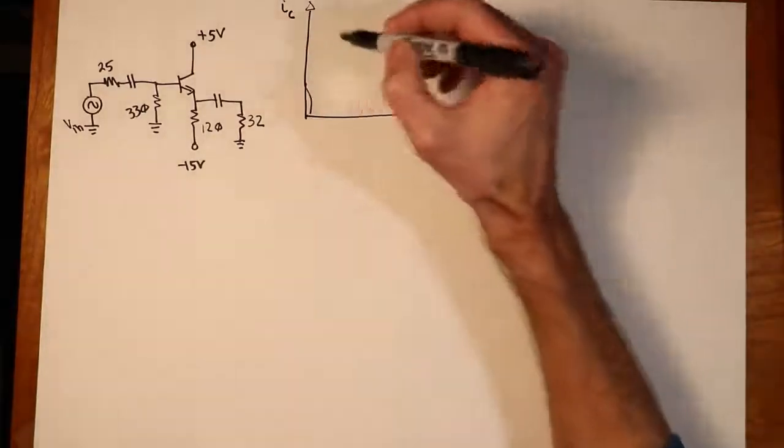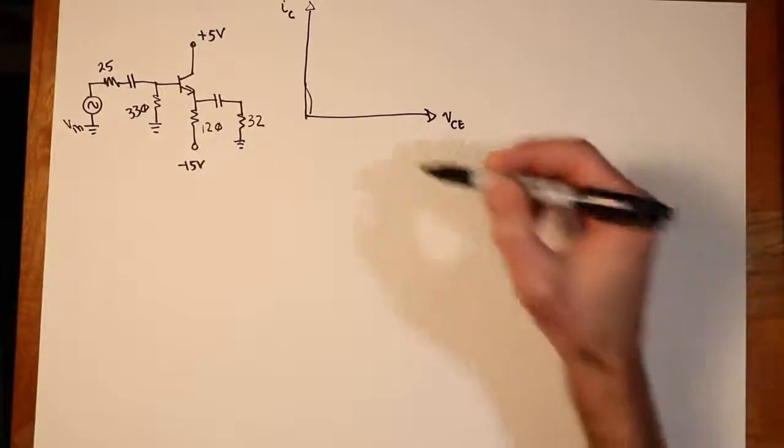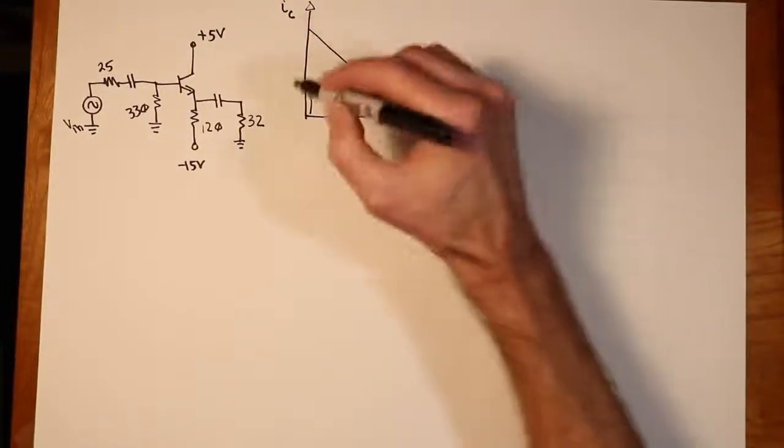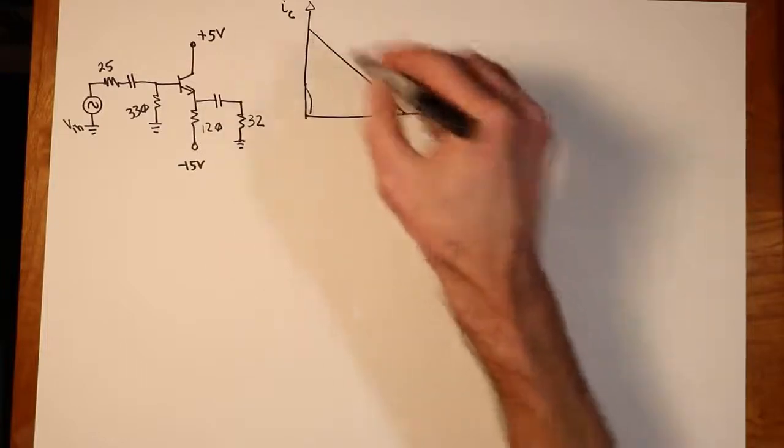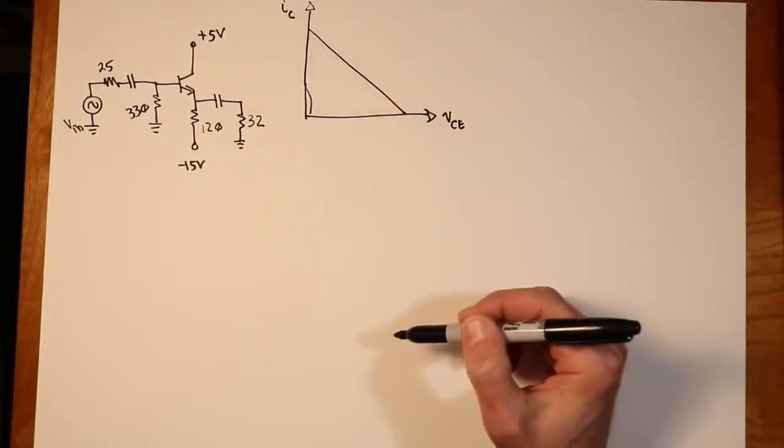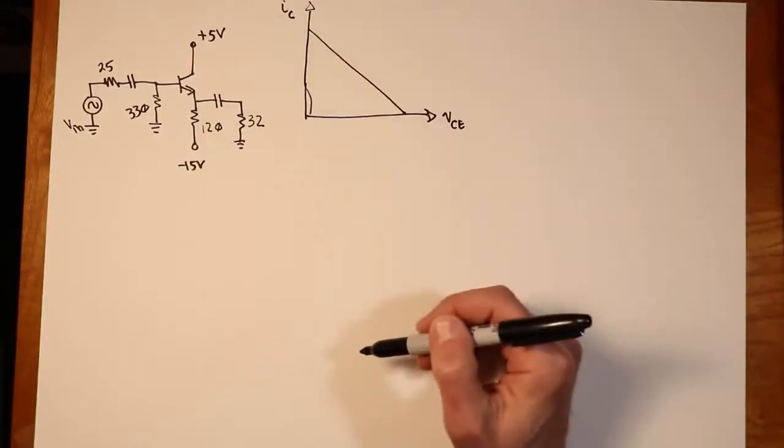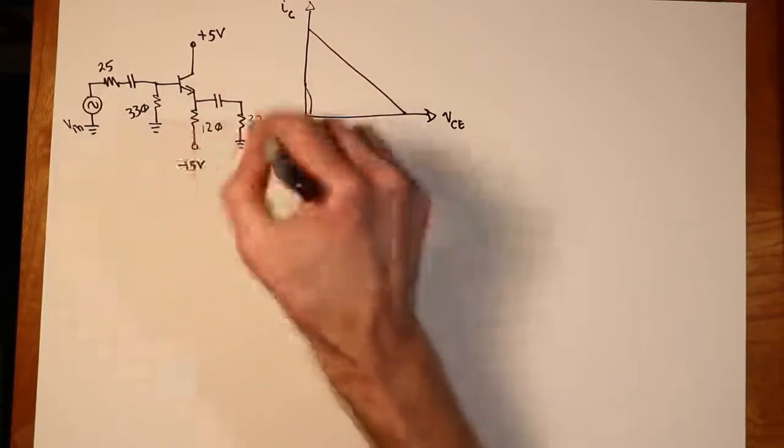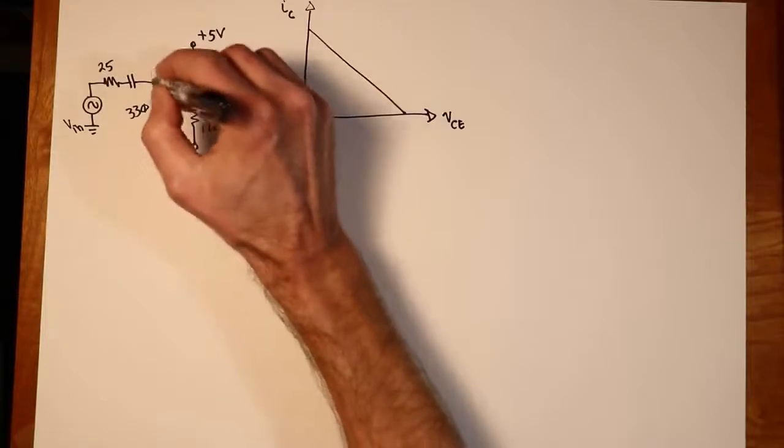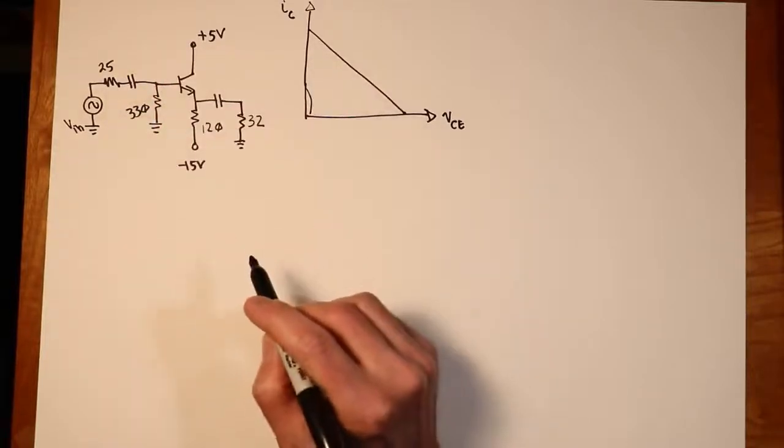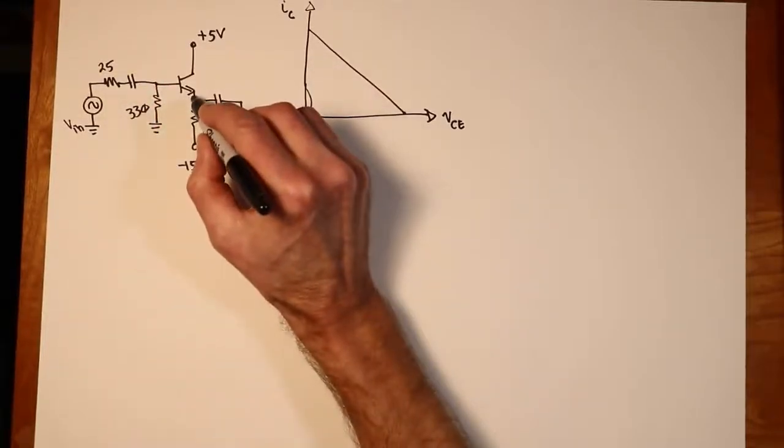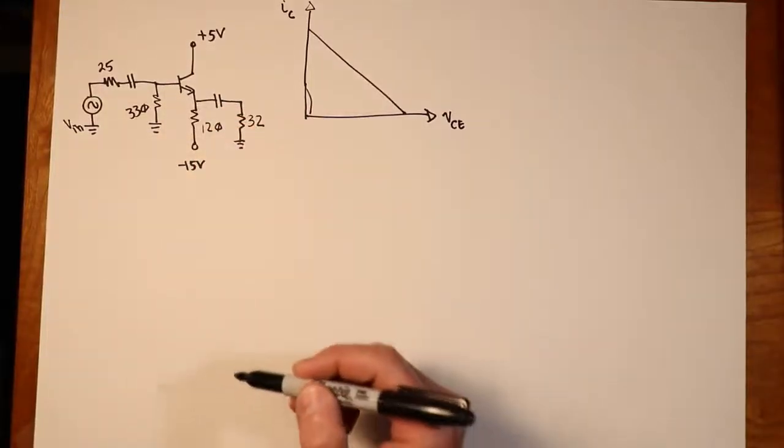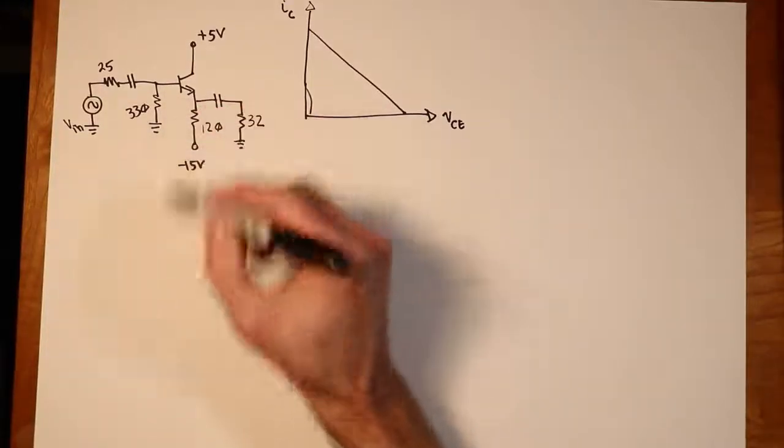DC analysis is required because we need to find the Q point. What is ICQ? What is VCEQ? So I'm just going to arbitrarily draw a line here. We'll figure out where the Q point on this line is and where the end points are. So first, what we would do, come back here, if we use an approximation technique and we said that the base was roughly zero volts DC, that would lead our emitter voltage to minus 0.7 and we'd have about 14.3 volts sitting across the biasing resistor of 120.